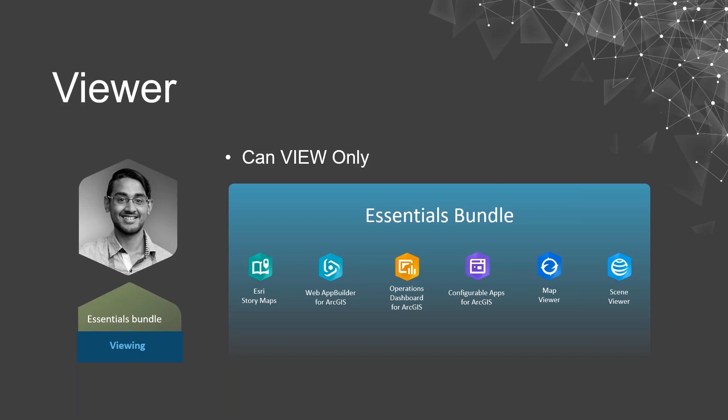Our first stop is the viewer user type. As the name suggests, this user type has view-only access to the essentials app bundle, which includes Esri Story Maps, Web App Builder, Operations Dashboard, configurable apps, as well as map and scene viewer. Just like the old level 1 users, the new viewer user types are free with your ArcGIS Enterprise license. In ArcGIS Enterprise your viewer licenses are free and complementary, but in ArcGIS Online there is a cost associated with them.